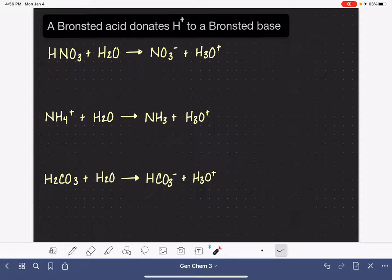A Bronsted acid is a molecule that donates an H-plus ion to a second molecule called the Bronsted base. The H-plus ion is so important in these acid-base reactions that we give it a nickname. We like to call it the proton.